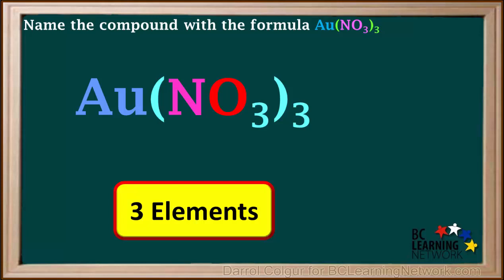We see that Au(NO₃)₃ has three elements: gold, nitrogen, and oxygen. Any ionic compound with more than two elements must contain a polyatomic ion.